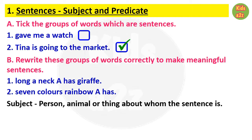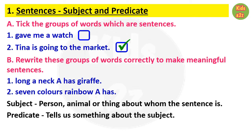animal, or thing about whom the sentence is. The predicate of a sentence tells us something about the subject. It will be more clear with an example: 'We will win the match.' To identify the subject of a sentence, ask the question 'who' or 'what' to the verb, and the answer is the subject.